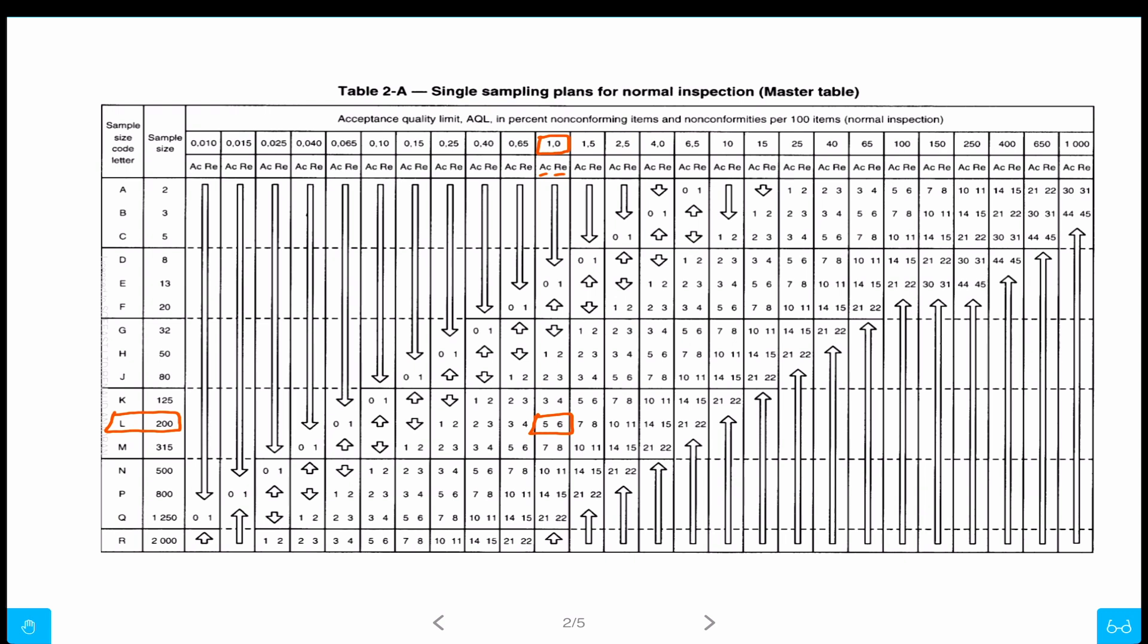As you can see, five is acceptance, six is rejected. So if we look at, five defectives is okay, six is not okay. Obviously one is okay, two is okay, and then seven etc. are not okay. So that's the way it works.